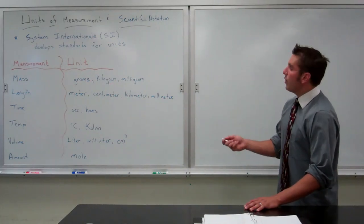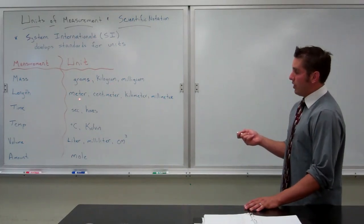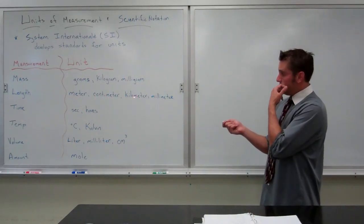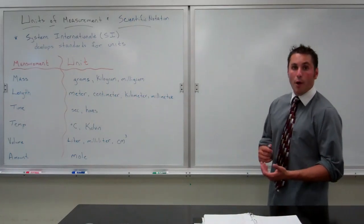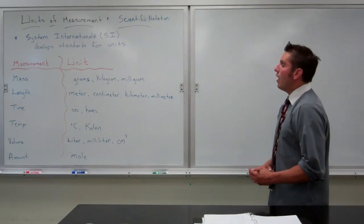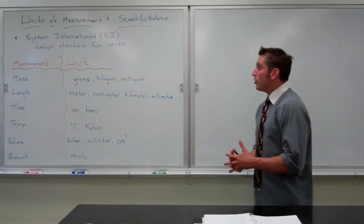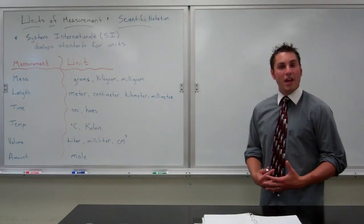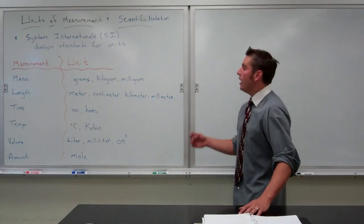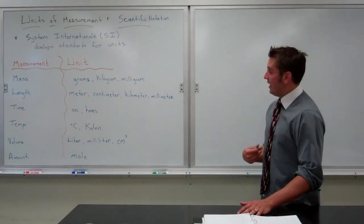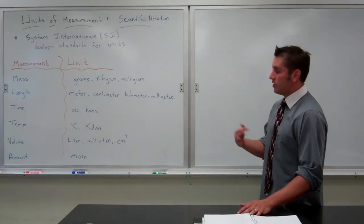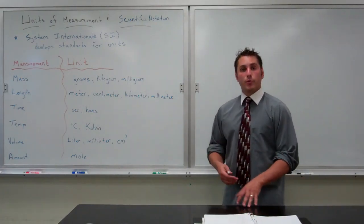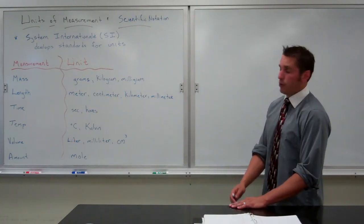Mass, base unit is the gram. Length, we will measure in the base unit, which is meter. However, you will also see centimeters, kilometers, and millimeters as you go through. Notice, these are all what we call metric units. Metric is how the world measures things in the science capacity. Only the U.S. uses feet and inches. Everywhere else uses meters to measure things. So we will have to do the same in here so that we can compare the results of our experiments to other places.